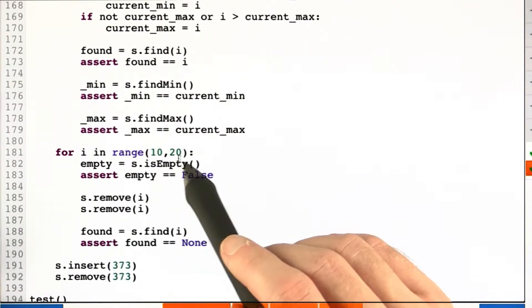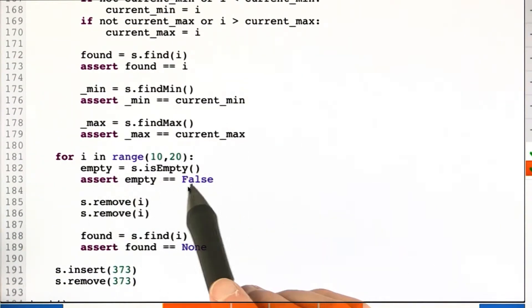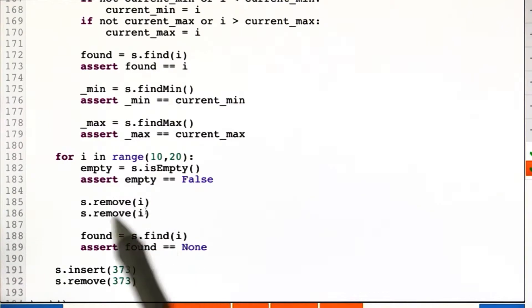And now we do the same thing except we try to remove. We just try to remove these, assert that it's not empty, and that we don't find after removing the key, the key in the splay tree because it shouldn't be in there anymore.